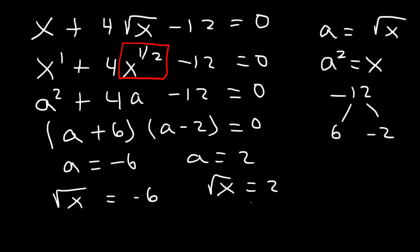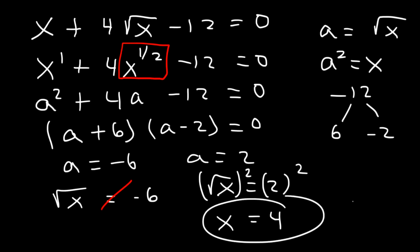The square root of x cannot equal a negative number. When you take the square root of something, the square root of 36 is positive 6, and the square root of negative 36 is 6i. There's no x value that will give us negative 6, so that solution doesn't work. For a equal to 2, we square both sides, giving us x equal to 4. The square root of 4 is 2, so that's the solution.